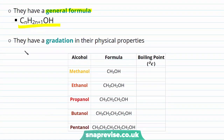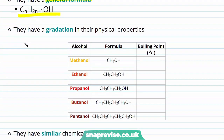As we expect in our homologous series, we see a gradation in the physical properties of our alcohols. So here we have our first five alcohols. We have methanol, ethanol, propanol, butanol and pentanol. Let's go ahead and fill in the boiling points of our alcohols so we can see the gradation in the physical properties.